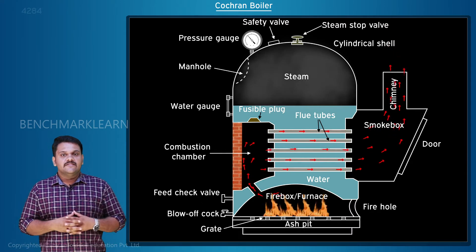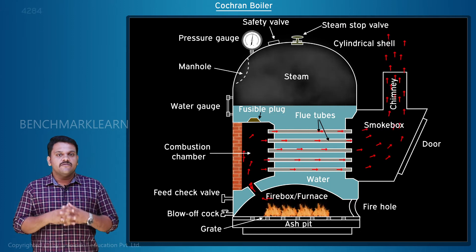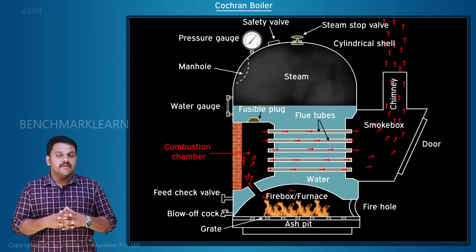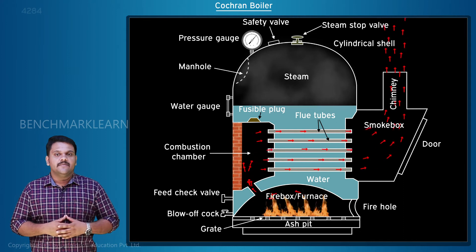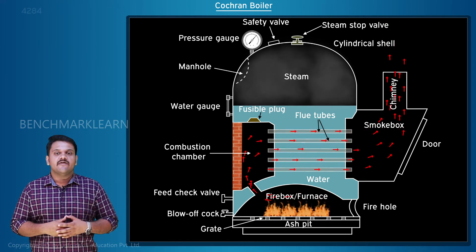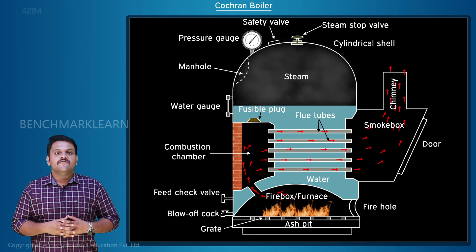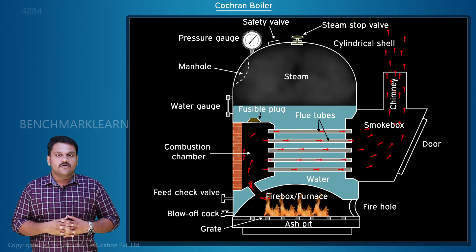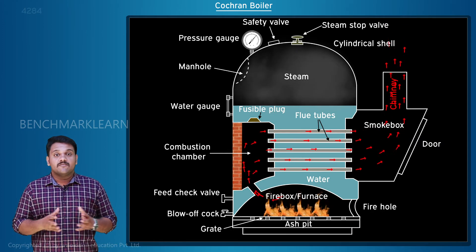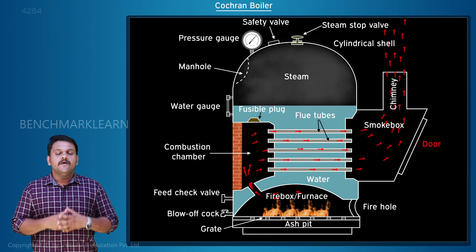From the furnace, the exhaust gases pass through the flue pipe to the combustion chamber, which is lined with bricks. From the combustion chamber, the hot gases pass through the horizontal fire tubes into the smoke box, and then escape to the atmosphere through the chimney.